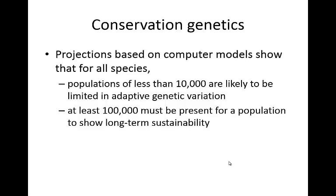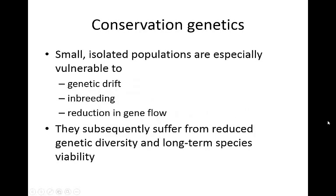Projections based on computer models show that for all species, if you have less than 100,000 of whatever type of organism you're talking about, you're likely going to be pretty limited when it comes to adaptive genetic variation. You're going to need at least 100,000 for a population to show long-term sustainability. If we ever do space travel and colonize other planets, we'd need a pretty big starting population to prevent problems from the founder effect. Small isolated populations are especially vulnerable to genetic drift, inbreeding, and reduction in gene flow, leading to reduced genetic diversity and long-term species viability.